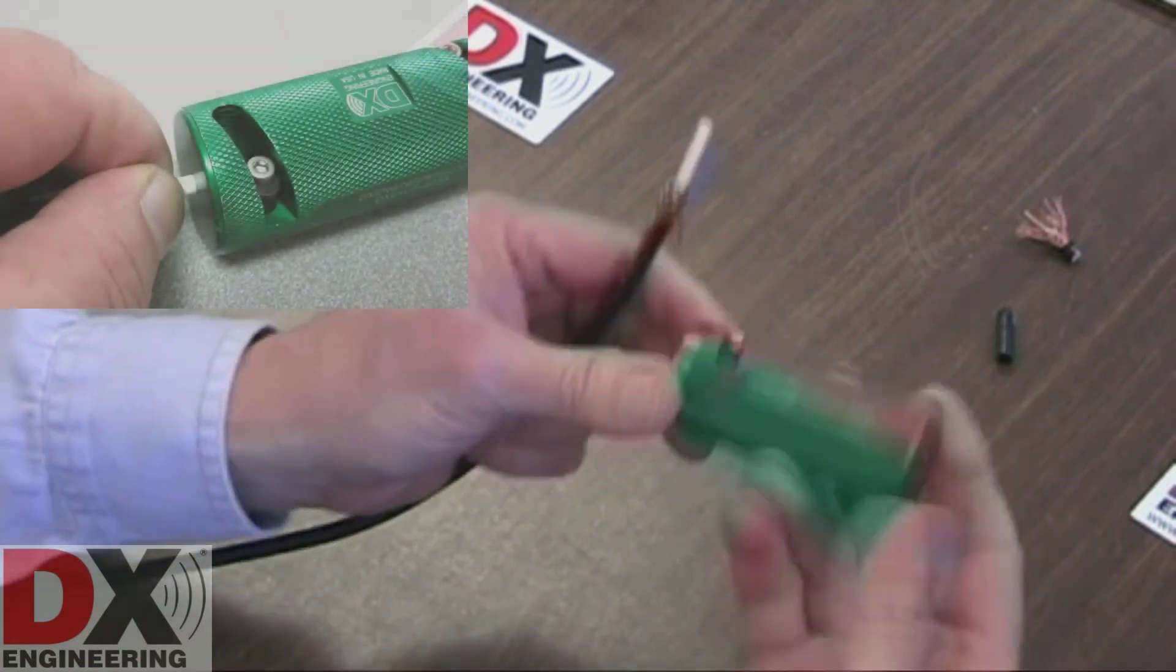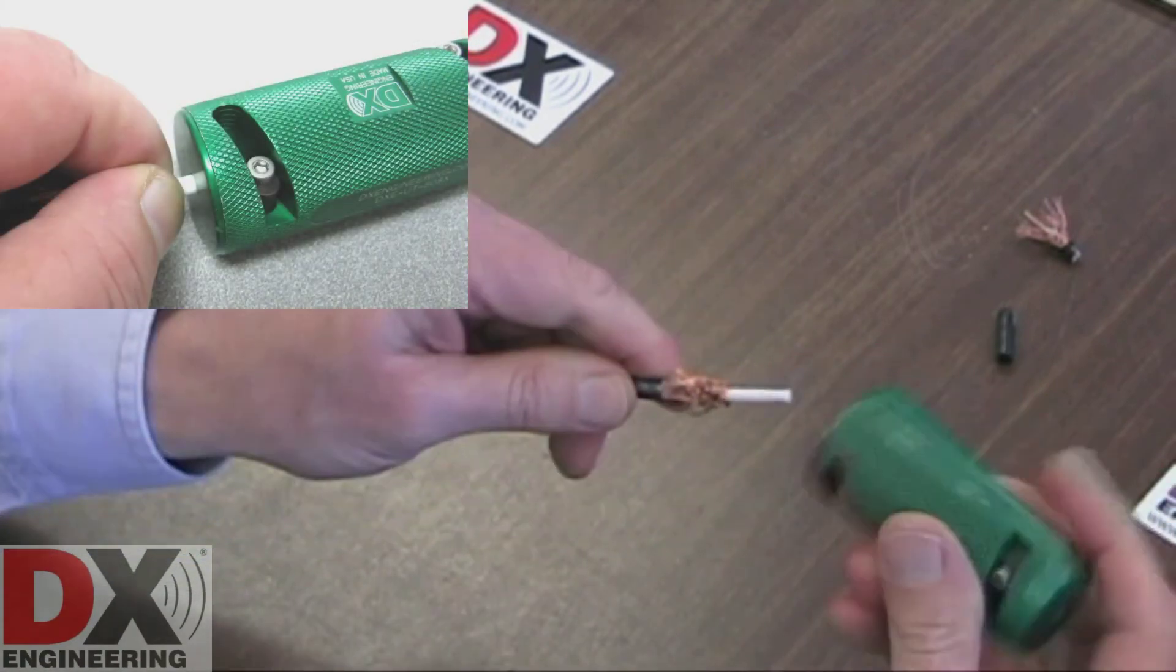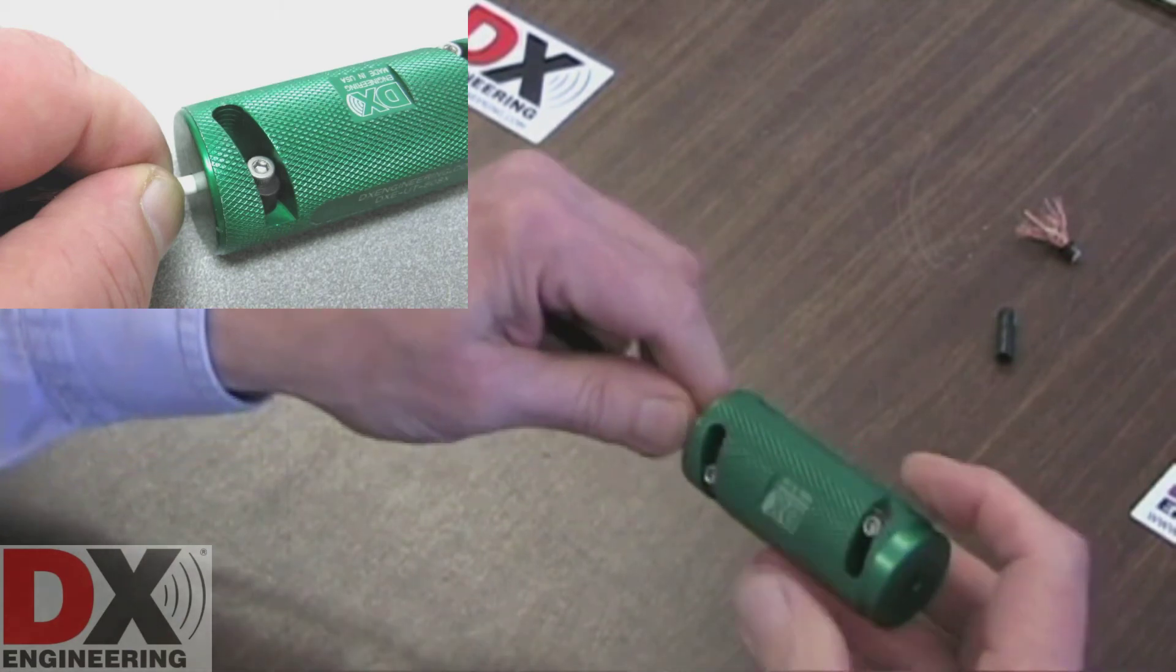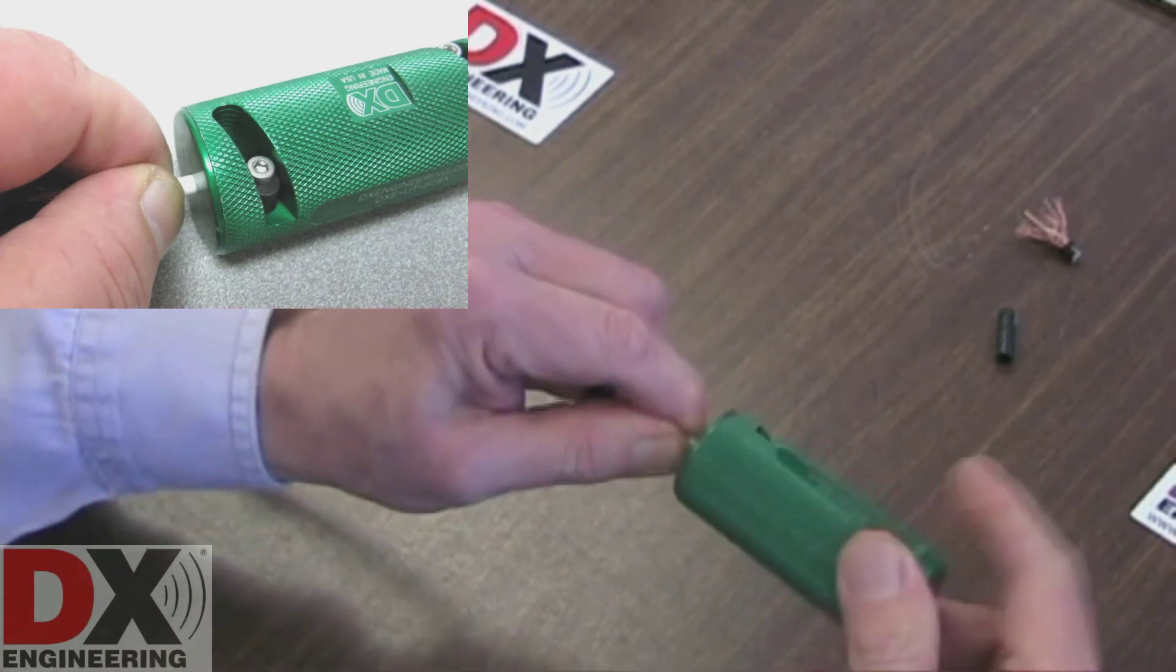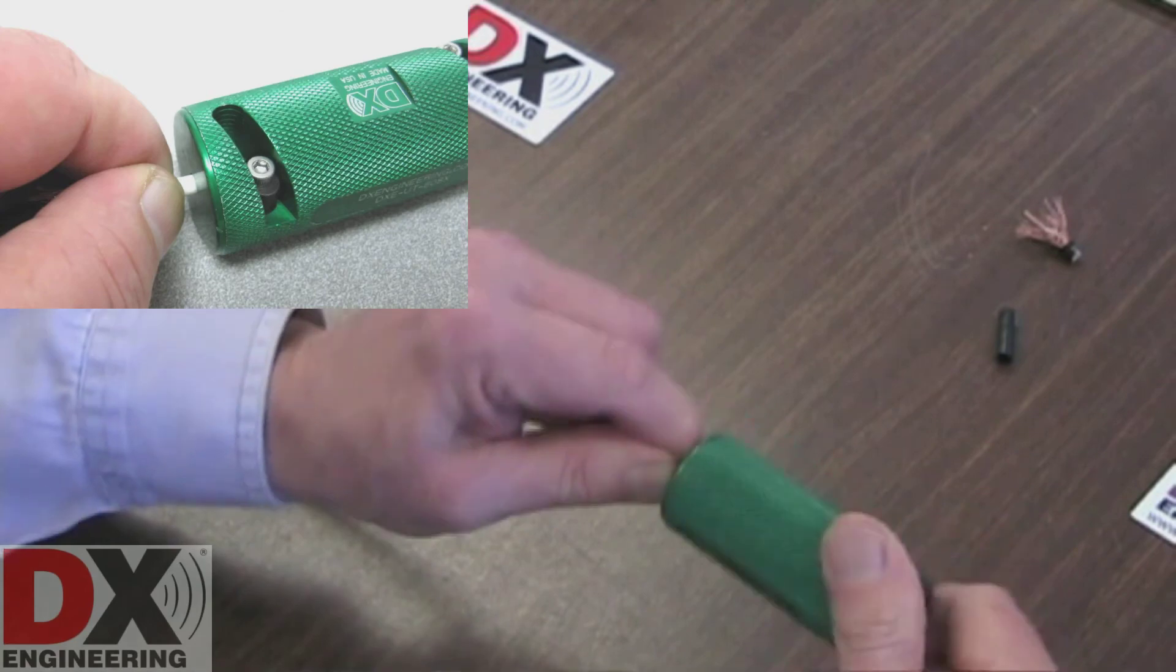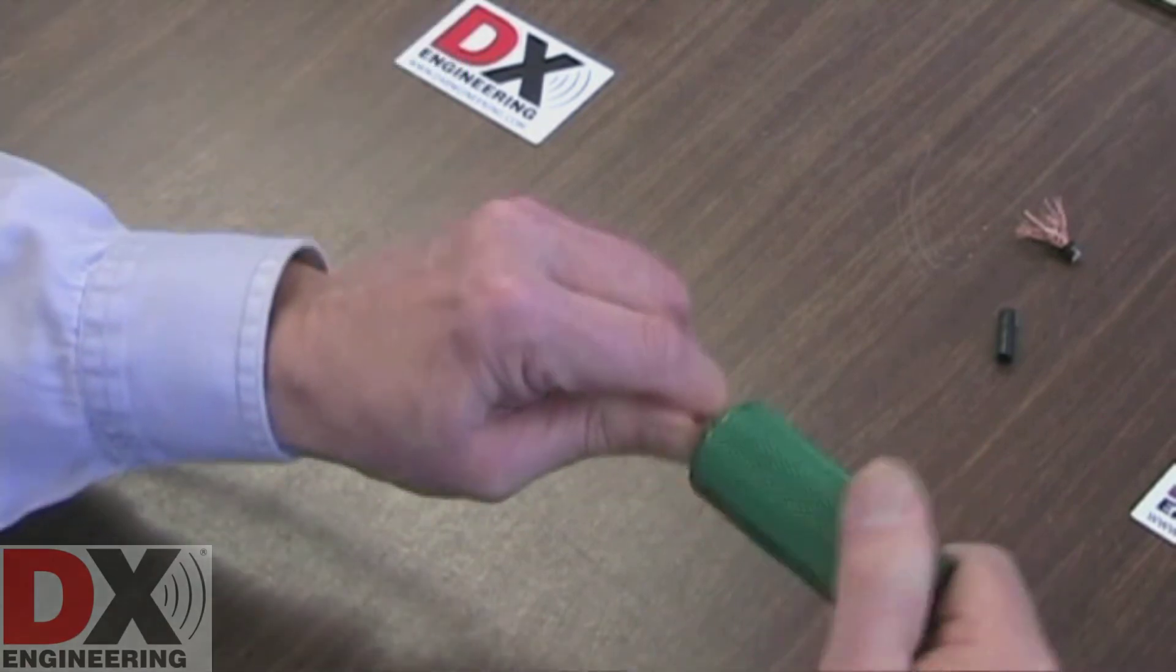Insert the coaxial cable into the tool using the second cut hole. Again, grasp the coaxial cable near the end of the tool. Keep it straight, not bent, while rotating the tool in a clockwise direction as you feed the cable into the tool.